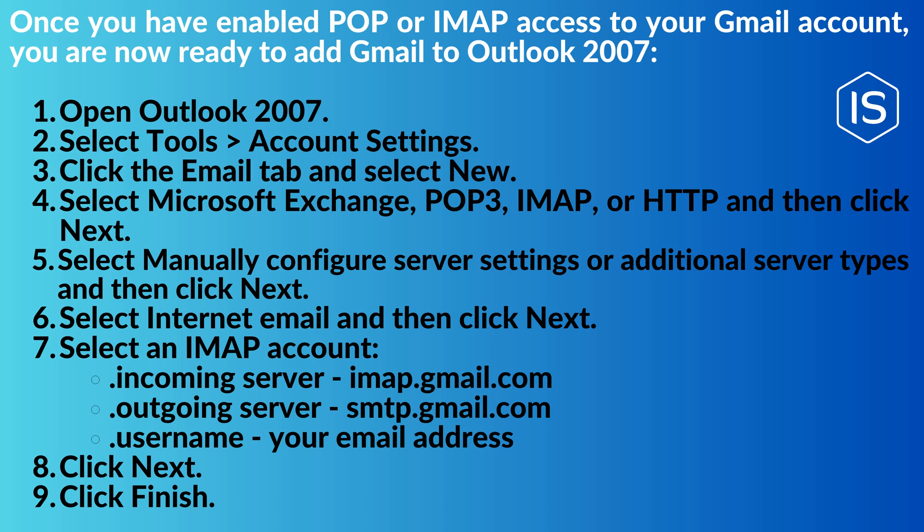Select Microsoft Exchange, POP3, IMAP, or HTTP, then click Next. Select Manually configure server settings or additional server types, then click Next. Select Internet Email, then click Next. Select an IMAP account and fill in the incoming server, outgoing server, and username. Then click Next and click Finish. This is how we can configure Outlook 2007 with Gmail.